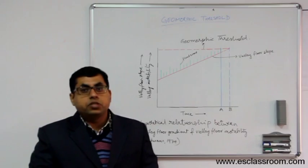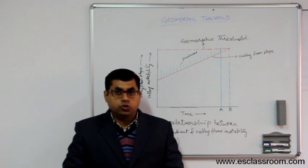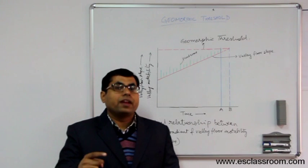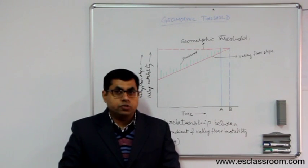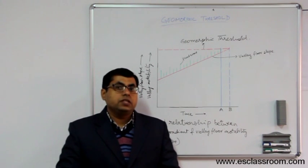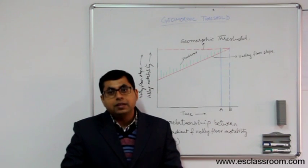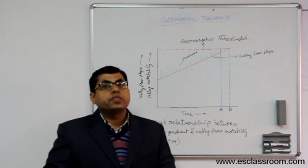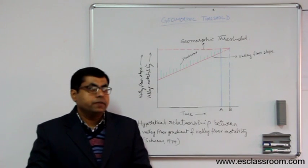One similar example is of snow avalanche, in which there is no external force. Snow avalanche which is not triggered by tectonic activity or by some climatic forces. In such snow avalanches, what we see is that these happen because of internal adjustment of the snow. So that is intrinsic threshold.